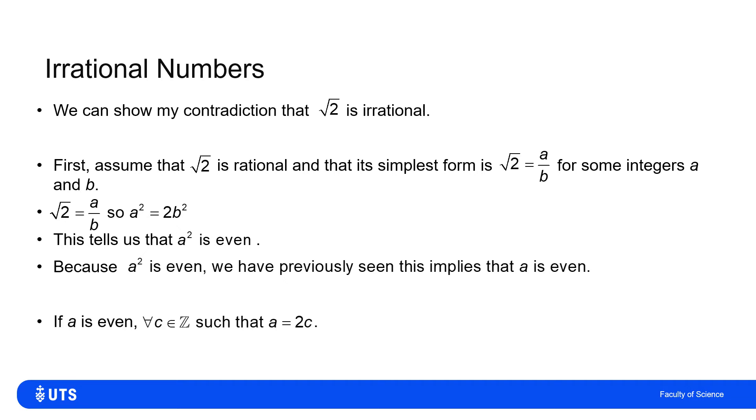And if A is even, there exists another integer C such that A is twice as big as C. A equals two C. But if A equals two C, then A squared equals two C all squared, which is twice B squared. It's four C squared, which is two lots of B squared.